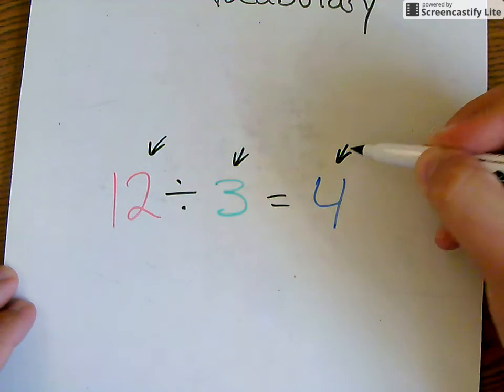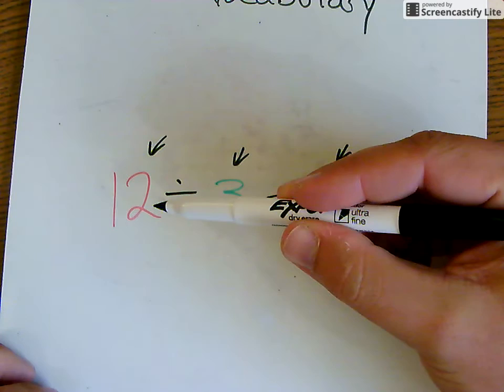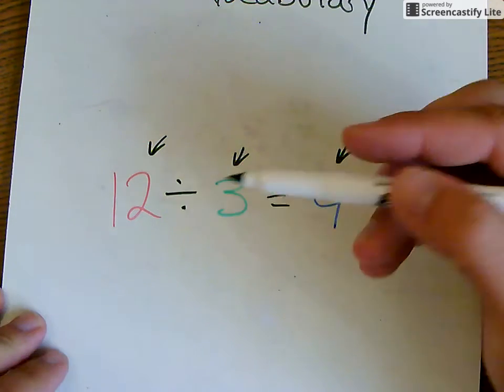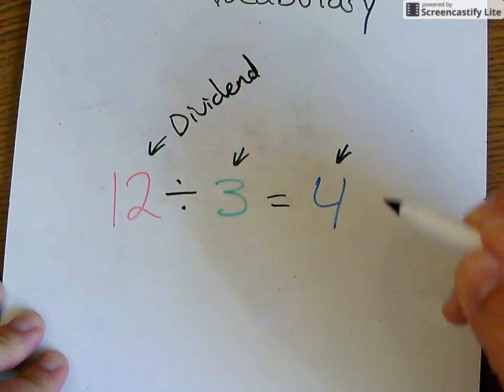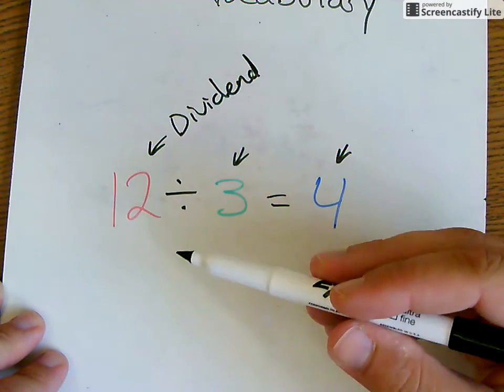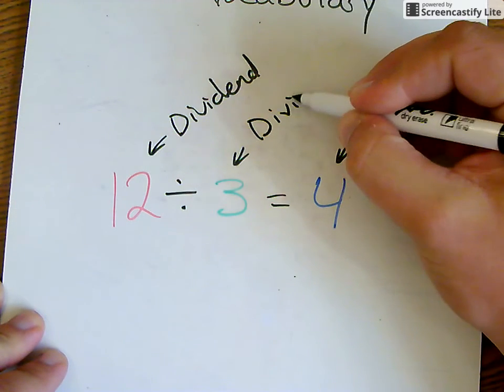The first number here, this is the number that we're dividing up. That number is called the dividend. That's the number we had that we divide up. The next number here is the number we are dividing by, or the divisor.